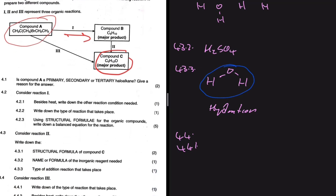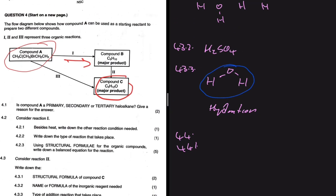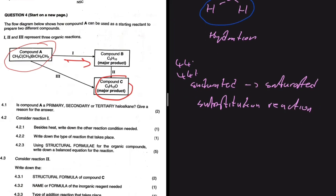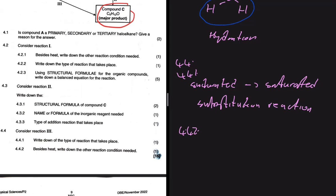For 4.4.1, consider reaction 3 and write down the type of reaction. Compound A is saturated — no double bonds — and compound C is also saturated — no double or triple bonds. That reaction is substitution: we are only substituting, not adding or removing anything, so it cannot be addition or elimination. It can only be substitution. So 4.4.1 answer: substitution reaction. For 4.4.2: besides heat, write down the other reaction condition needed. We need a dilute base.